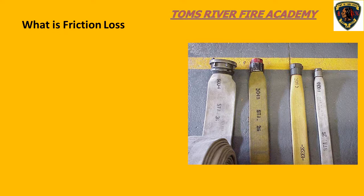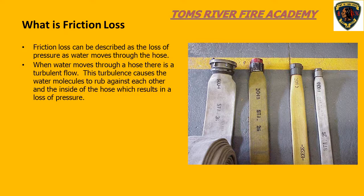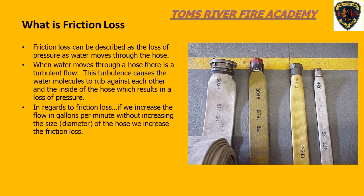Friction loss can be defined as the loss of energy or pressure as water moves through a fire hose. Water moving through our hose creates a turbulent flow — the water molecules rub against each other and against the inside lining of the hose. For example, a fog nozzle requires 100 PSI nozzle pressure. If we pump 100 feet of hose at 100 PSI, we will deliver less than the 100 PSI nozzle pressure, so we must increase engine pressure to compensate. This is what we refer to as friction loss.